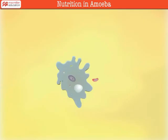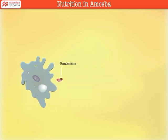Amoeba feeds on microscopic algae, bacteria, and plant cells present in water. There are five stages in the process of nutrition in amoeba.